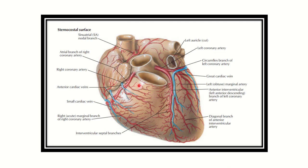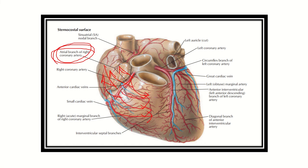The right coronary artery arises from the anterior aortic sinus, gives branches to the right atrium and right ventricle — except a very small part close to the anterior interventricular groove, which is supplied by branches from the left coronary artery. The right coronary artery finally passes posteriorly through the atrioventricular groove. It supplies the right atrium, right ventricle, the SA node, the AV node, and the septum in the posterior interventricular groove.